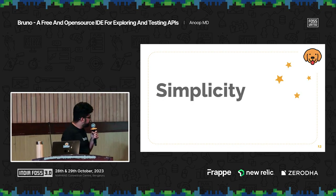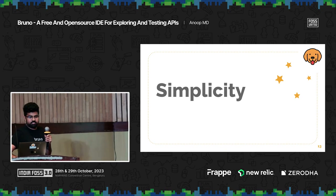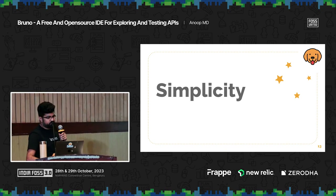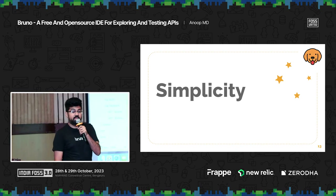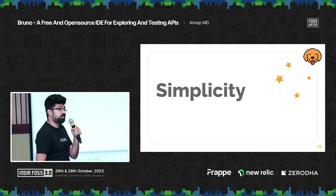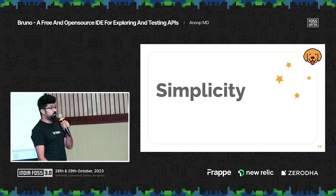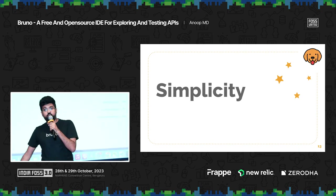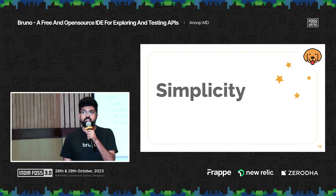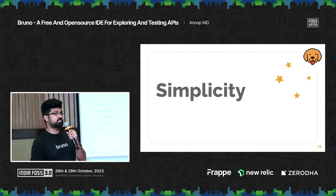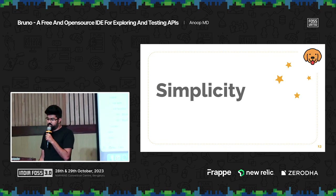I also want to talk about simplicity. If you look at Bruno, it's just simple. There's no bloat. You don't see a login button — you'll never see a login button. You'll never see a collection network button, documentation, API governance, monitoring, whatnot. You'll just see what is needed. We're not talking about simplicity for the sake of simplicity — we're talking about simplicity because that's all that is needed for 99% of developers who use an API client.